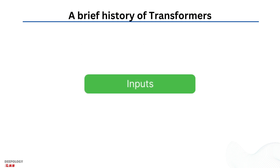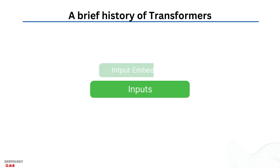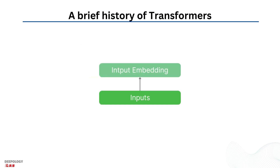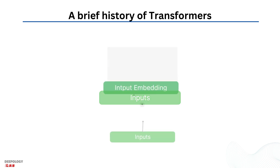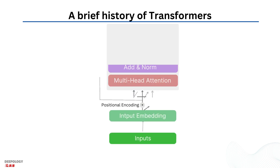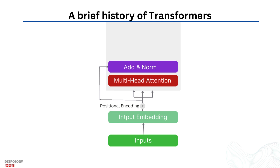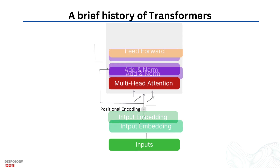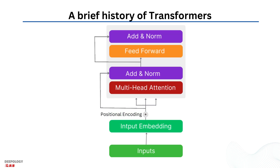Attention mechanisms combined with RNNs were the predominant architecture for facing any task involving text until 2017, when a paper was published and changed everything, giving birth to the now widely used transformers. The paper was entitled 'Attention is All You Need.'